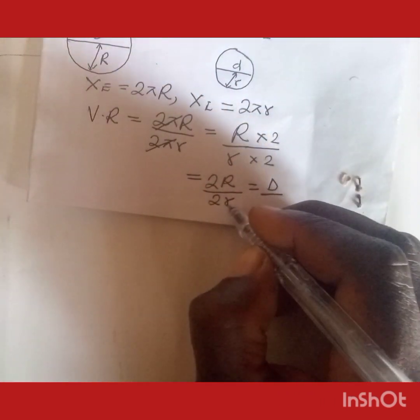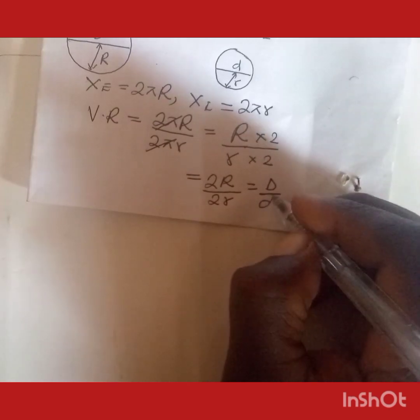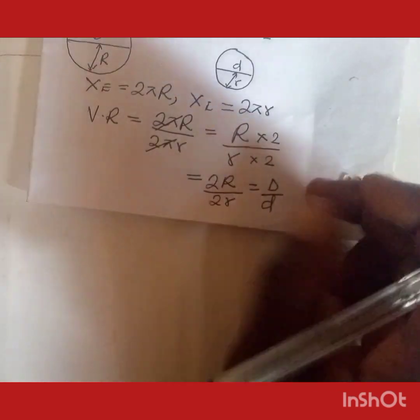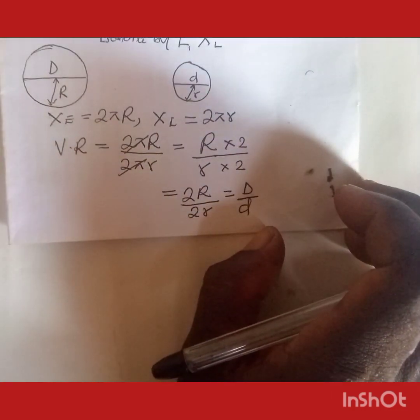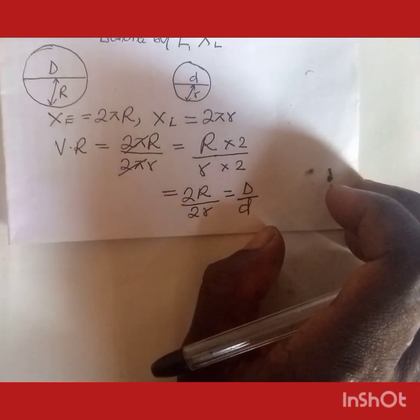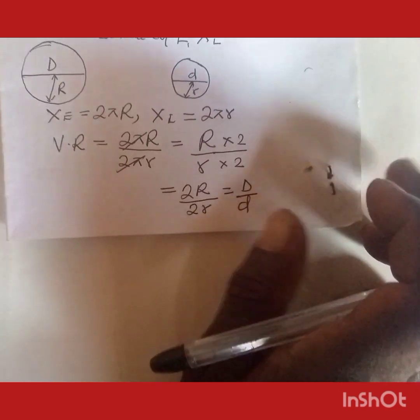Therefore, the velocity ratio of the wheel and axle system is simply the ratio of the wheel diameter to the axle diameter. Thank you.